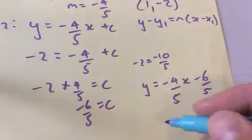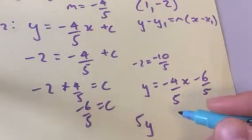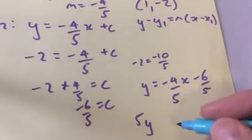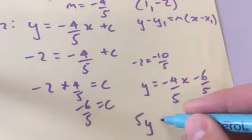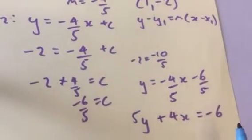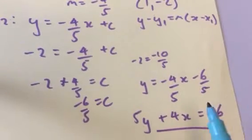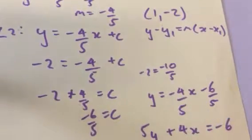The question that asked us, it started out with 5y plus 4x equal to 3. So let's get it back into that form. Plus 4x equal to minus 6. So that's then the line that's parallel to the first one going through the point 1 minus 2.